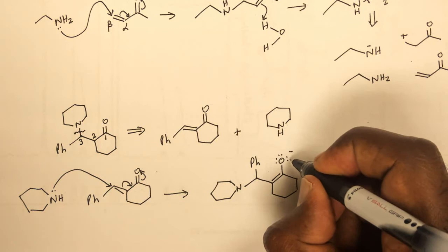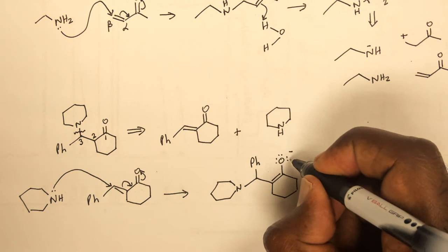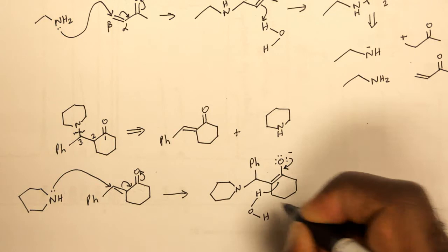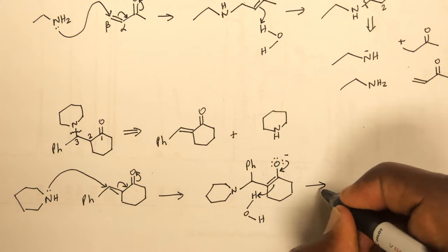When the electrons flow back, we could probably protonate it using a weak acid like water, and that would give us the product that we deserve.